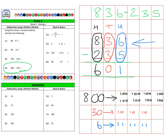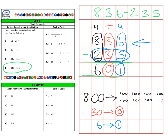Subtracting 235, we start with the units, taking away five of the six — removing one, two, three, four, five — leaving one unit. Then we take away 30, which is three tens: one ten, two tens, three tens — leaving nothing. Finally, from eight hundreds we subtract two hundreds — removing 100 then another 100 — leaving six hundreds for a final answer of 601.